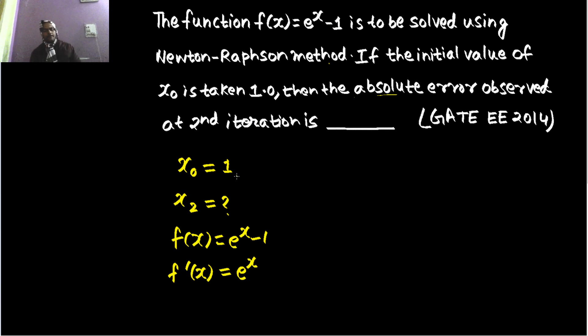That is your exact value and your approximate value you will get from Newton-Raphson method. So you will take their difference and take the absolute value of that. That is what they are asking.